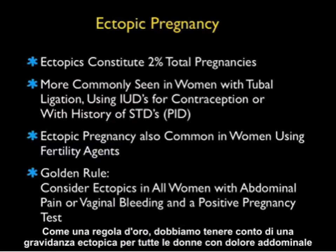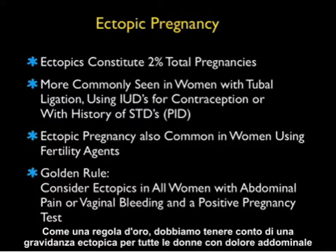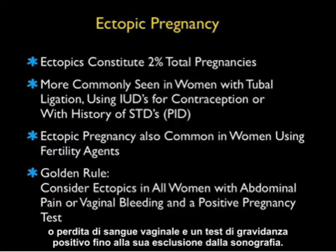As a golden rule, we must consider ectopic pregnancy in all women with abdominal pain and/or vaginal bleeding and a positive pregnancy test until ruled out by sonography.